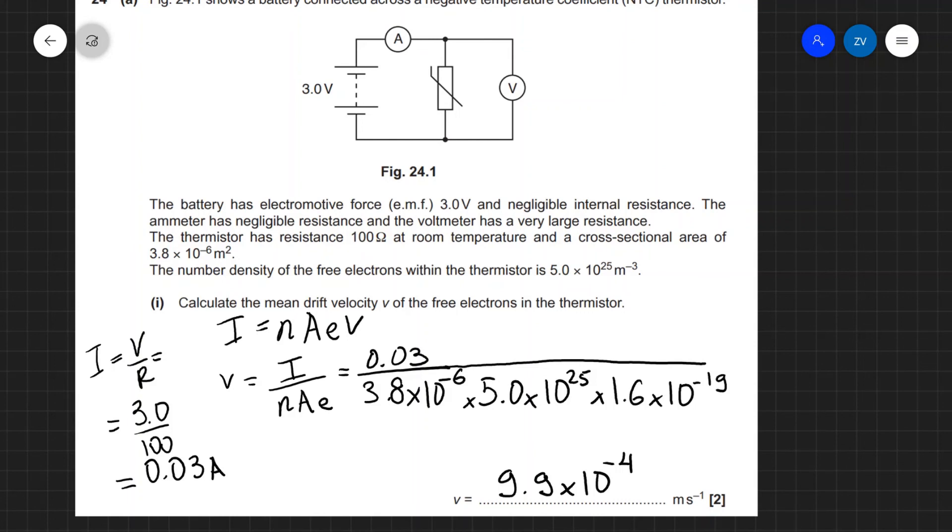In this case one of our marks is going to go for calculating the current the other one is going to go for a correct substitution and final answer. As you can see the drift velocity is actually quite small so 9.9 times 10 to the power of minus 4 that's only about 0.1 millimeter or so so the actual electrons are moving really slowly.